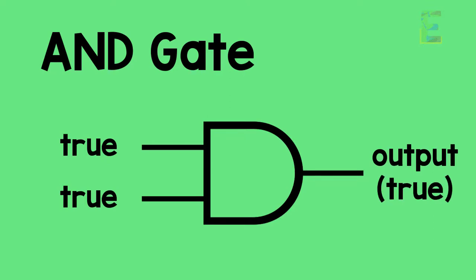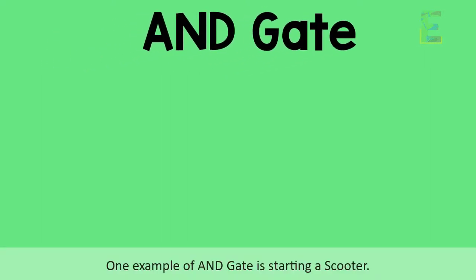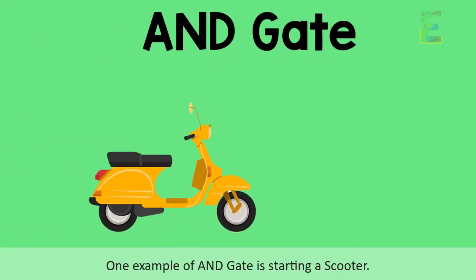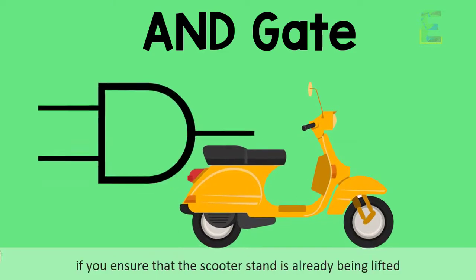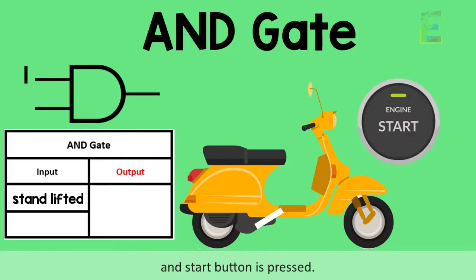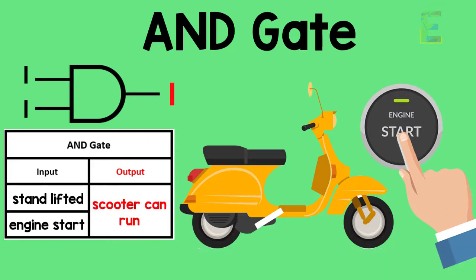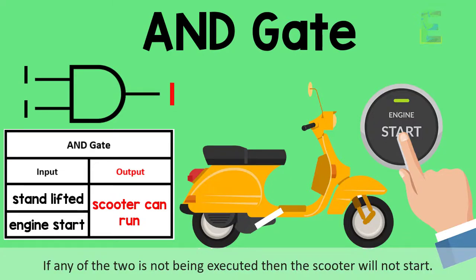One real-life example of an AND gate is starting a scooter. The scooter can only be started if you ensure that the scooter stand is already lifted and the start button is pressed. If any of the two conditions is not met, the scooter will not start.